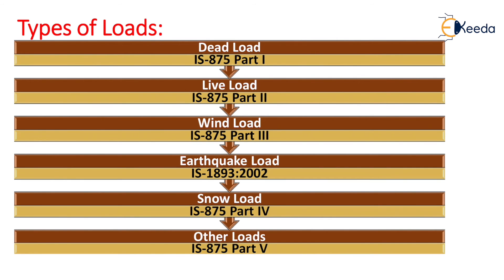Next, we will study types of load. There are six types of load: first is dead load (IS 875 Part 1), second is live load (IS 875 Part 2), third is wind load (IS 875 Part 3), fourth is earthquake load (IS 1893:2002), fifth is snow load (IS 875 Part 4), and other loads (IS 875 Part 5).